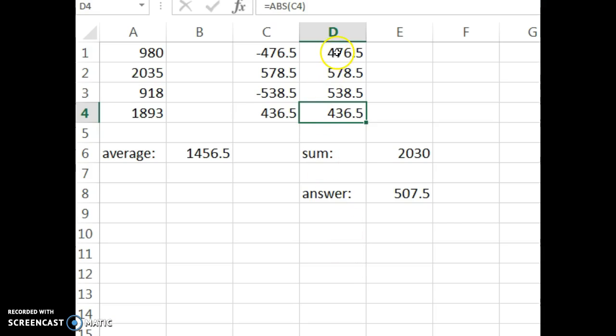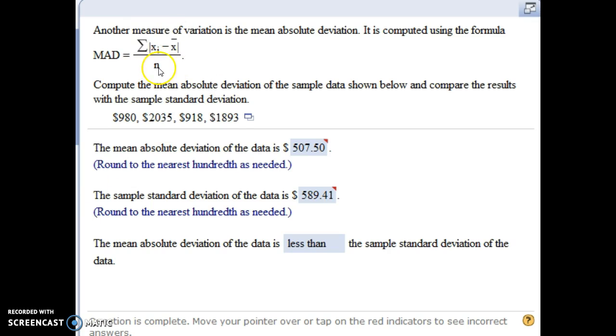So I sum up the four answers I got. I get the sum, and then I get my final answer by doing the last bit of math here. Dividing by n, which is how many data values we have. So I divided by 4 at the end to get this value.